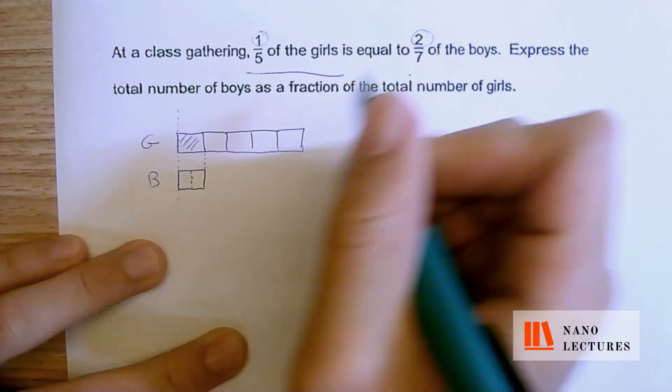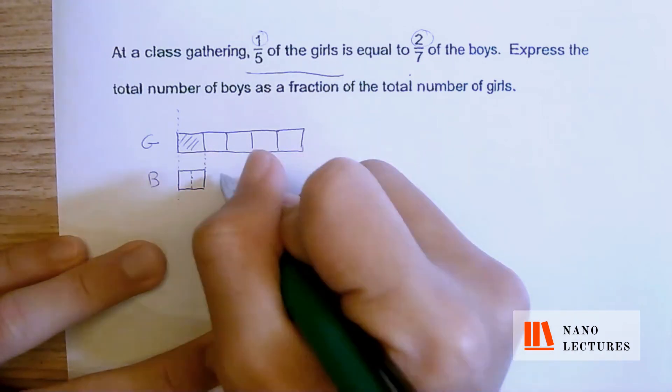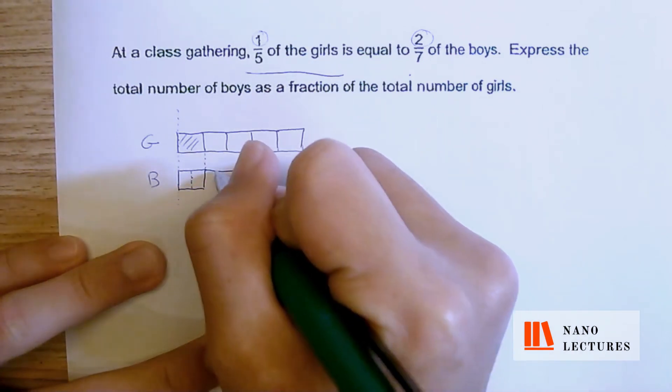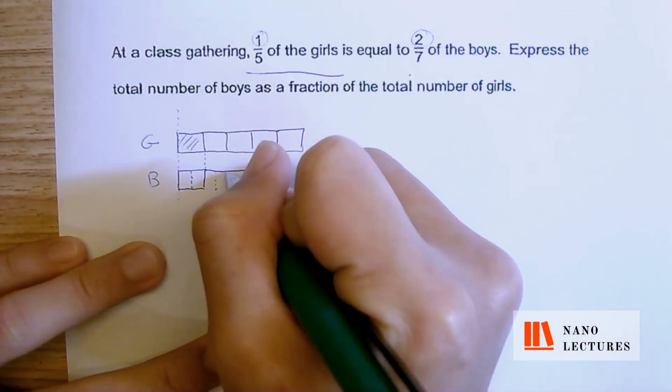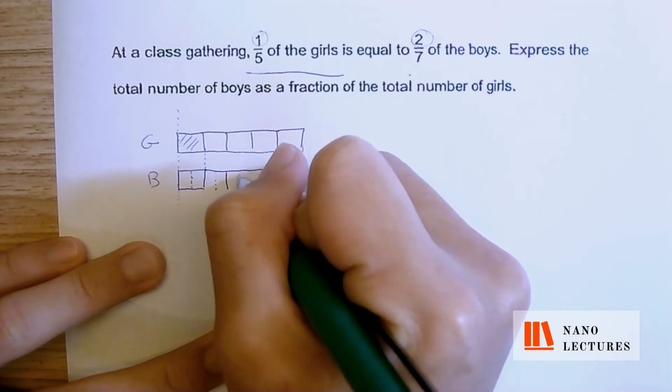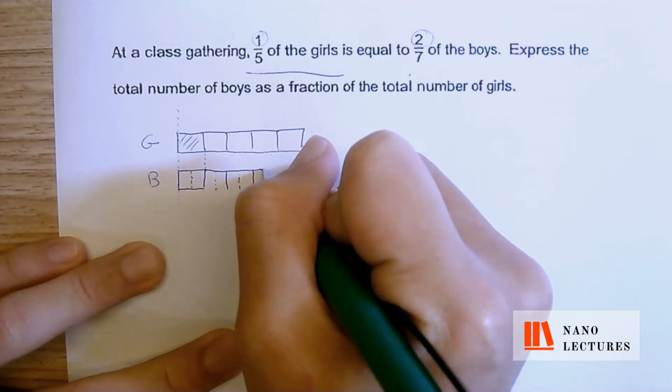Since this one is two and I have to draw seven, I have to draw five more. So I'm going to extend the line, one, two, three, four, five.